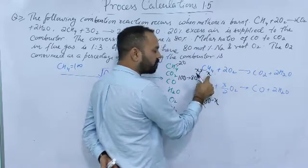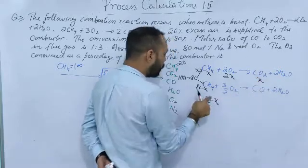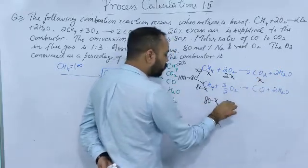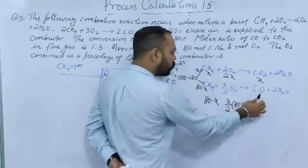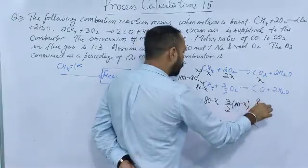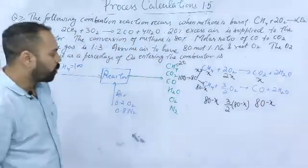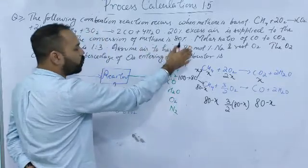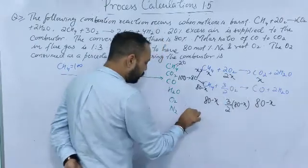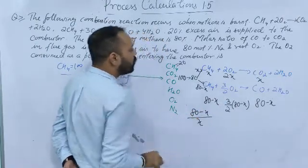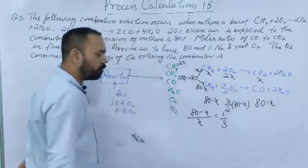For x moles reacting by reaction 1: oxygen required is 2x, and CO2 formed is x. For (80 − x) moles reacting by reaction 2: oxygen required is 3/2 × (80 − x), and CO formed is (80 − x). What is given in the problem? The molar ratio of carbon monoxide to carbon dioxide: (80 − x) / x = 1/3.